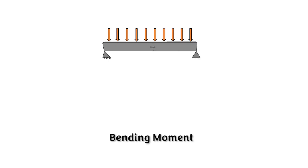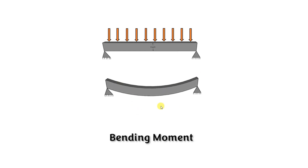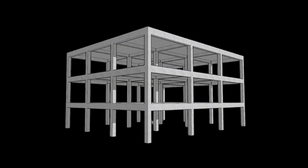Next is bending moment. When the load is applied on the structure, it tends to bend. We find the sum of the bending moment either to the right or to the left of the section. If bending is downward it is a sagging bending moment; if it is in the upward direction, it is a hogging bending moment. Practical examples are beams and slabs supporting floors or roofs.